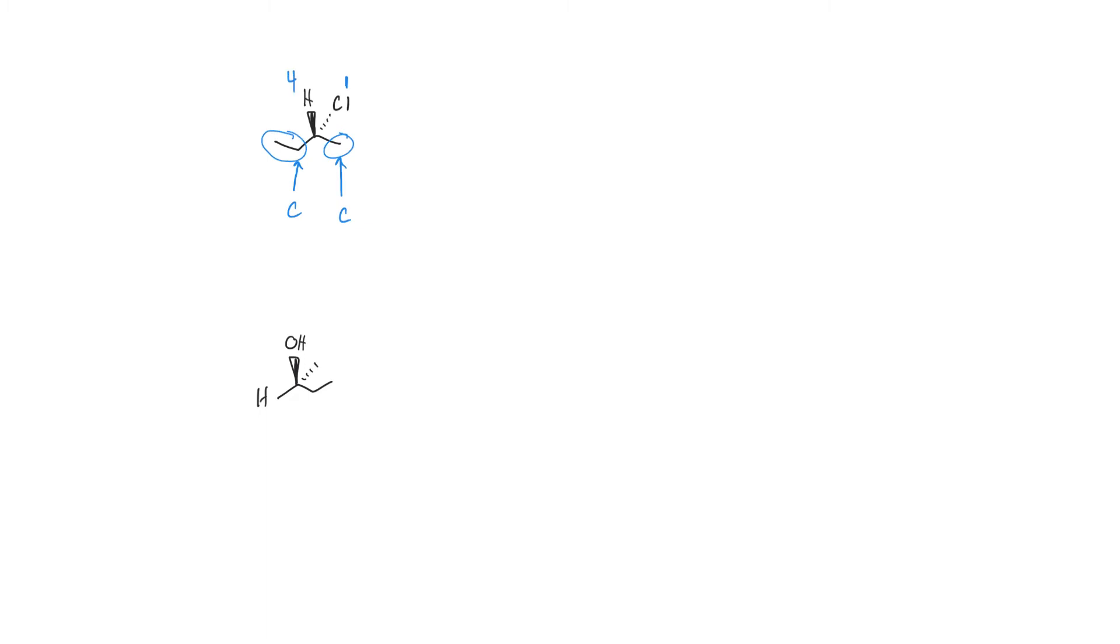The hydrogen has the lowest atomic number. So I can give that number four. How do I figure out which of these carbons is the higher priority? Let's make a list of what's attached to each carbon beyond the chirality center. The carbon on the right side is attached to three hydrogens, it's a methyl group. The carbon on the left side is slightly different. It's attached to another carbon and two hydrogens, we've got a CH2.